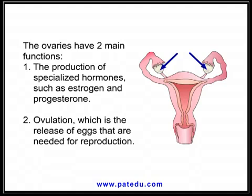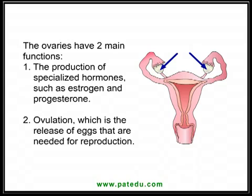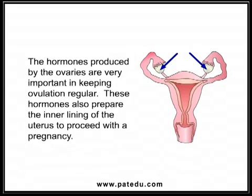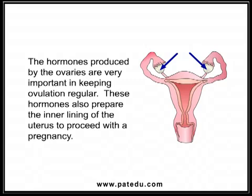The ovaries have two main functions. First, the production of specialized hormones such as estrogen and progesterone. Second, ovulation, which is the release of eggs that are needed for reproduction. The hormones produced by the ovaries are very important in keeping ovulation regular, and they also prepare the inner lining of the uterus to proceed with a pregnancy.